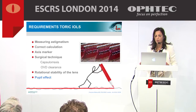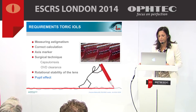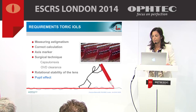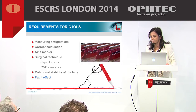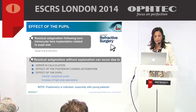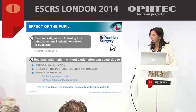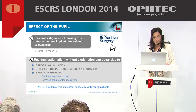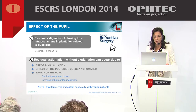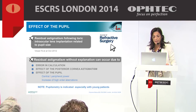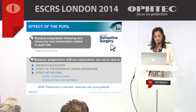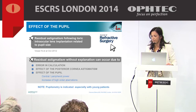What do we know about the effect of pupil size on visual acuity in pseudophakic eyes with toric IOLs? Some studies indicate that pupil size may have an impact on visual quality. Residual astigmatism has been related to pupil size because of differences in central and peripheral power and the increase of high-order aberrations, especially in young patients with large pupils who undergo toric IOL implantation.